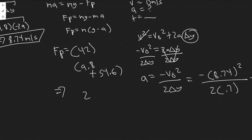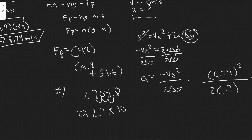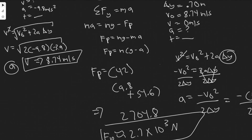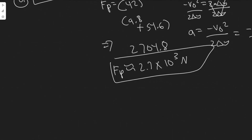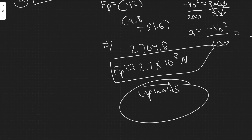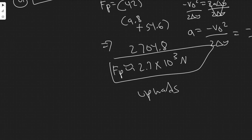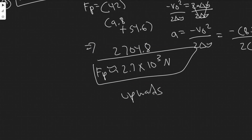Calculating: 42 times (9.8 plus 54.6) gives a value of approximately 2704.8 Newtons, which is about 2.7 times 10 to the 3 Newtons. The force F_P is directed upward, which makes sense. So the average force exerted on the torso by his legs during deceleration is 2.7 times 10 to the 3 Newtons upward.